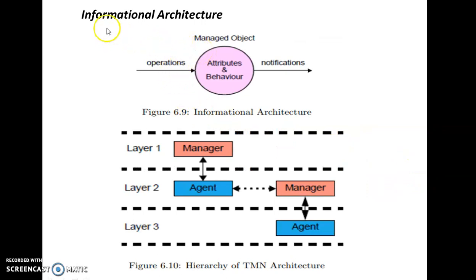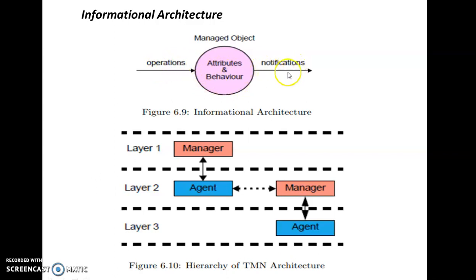The last architecture is the Information Architecture, where each managed object has different aspects: attributes, behavior, operation, and notification. Attributes define the properties or characteristics of the object. Operation indicates what operations the managed object can perform. Behavior indicates the response to those operations, and notification indicates what is generated by the managed object when a threshold level is crossed.